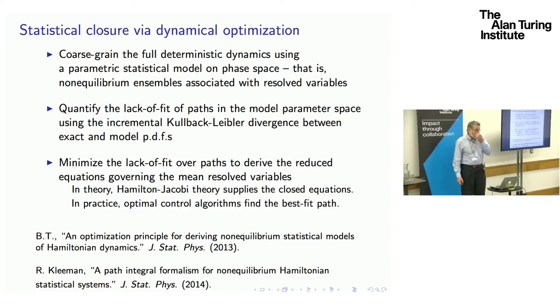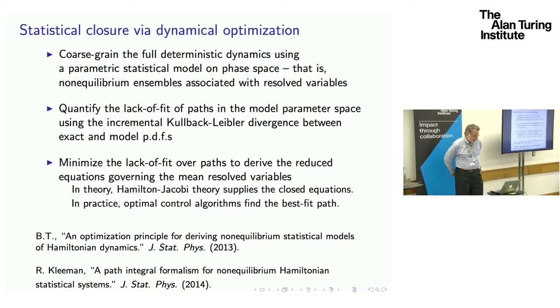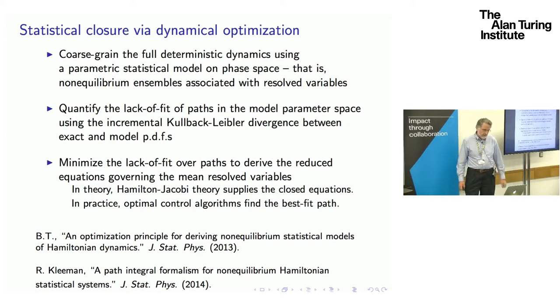The overall procedure is as follows. I'm going to start from completely deterministic underlying dynamics, a high degree of freedom Hamiltonian system would be typical, and impose on that some kind of statistical model, a parametric model. This is just PDFs, single time PDFs on the phase space of the underlying dynamics. This can be thought of as non-equilibrium ensembles on the phase space determined by a certain number of chosen observables, which I'll call resolved variables or relevant variables.